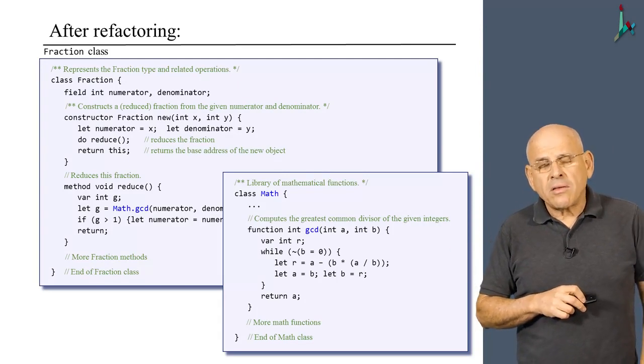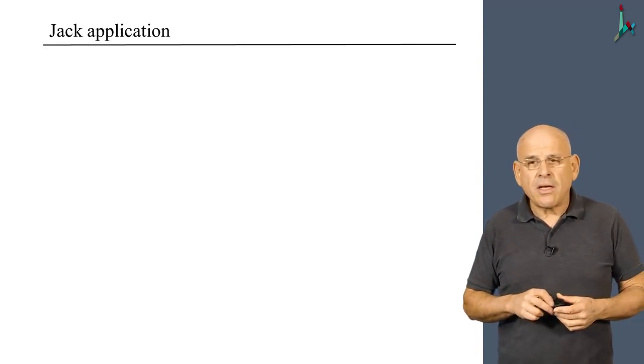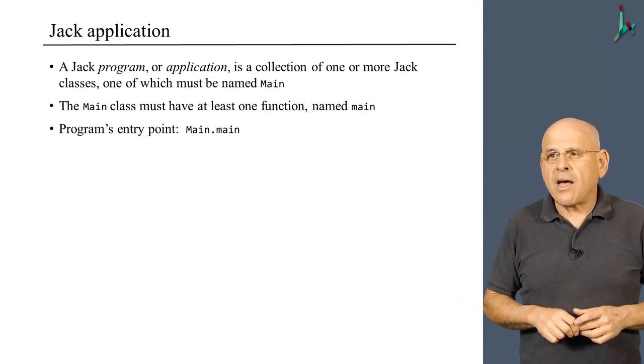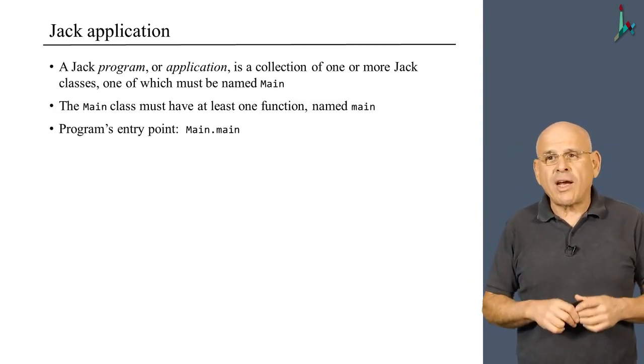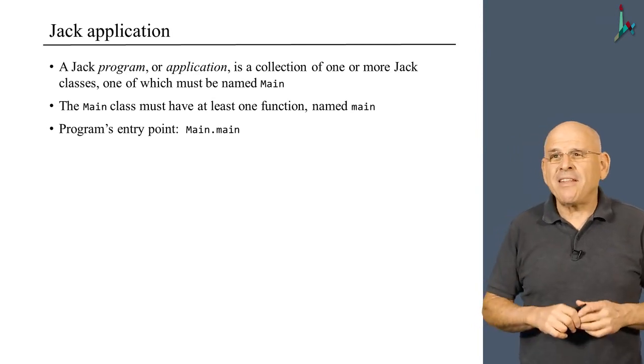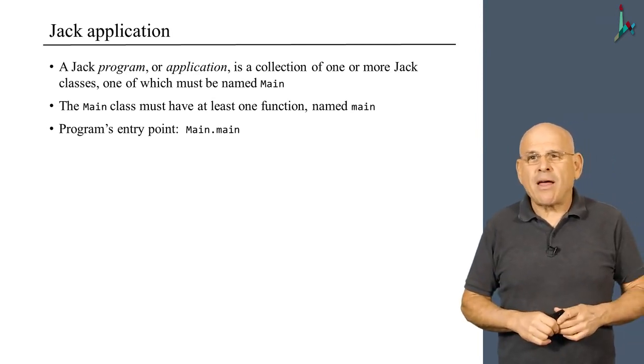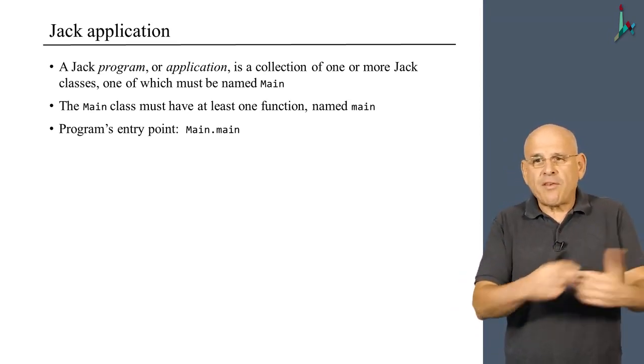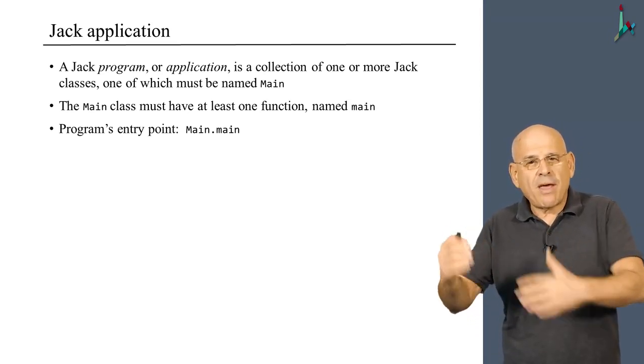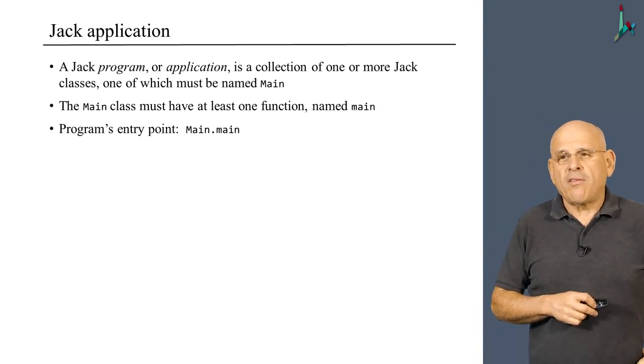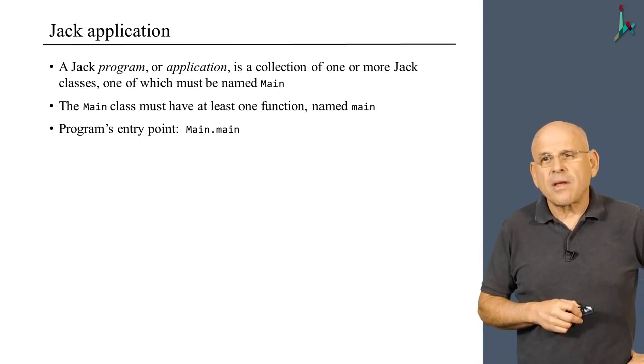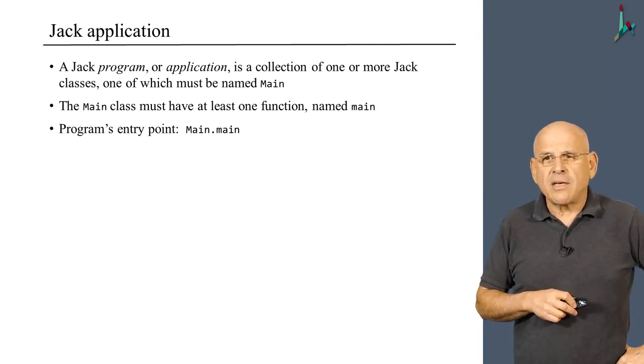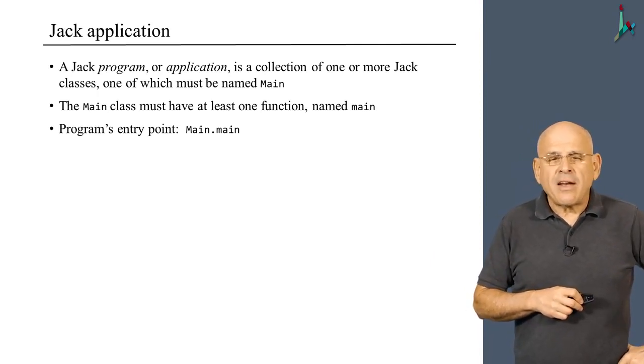All right, moving along. A Jack application, as we explained before in the course, is a collection of one or more Jack classes, hopefully well designed. One of which must be named main. This class should have at least one function named main, and main.main becomes the entry point of the entire application. I'm repeating this here just for completeness, because we discussed this before.